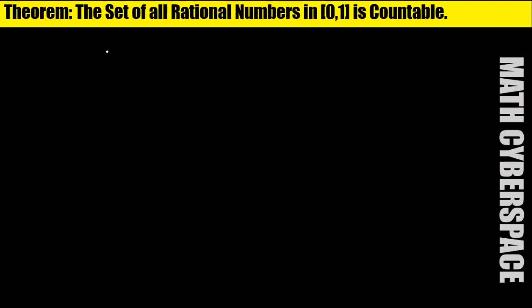Hi everyone. So let's understand this important theorem. The statement is: the set of all rational numbers in the closed interval [0,1] is countable. In a previous video, I proved that the set of all rational numbers is countable. Here the limit is fixed, that is, the closed interval [0,1]. I have to show that in [0,1], the collection of all rational numbers is countable. So let's prove this.